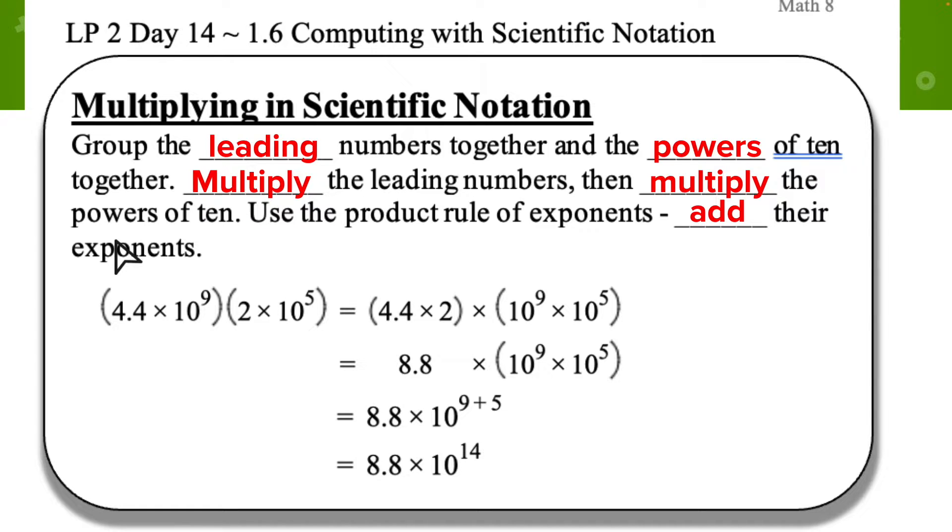So we have 4.4 times 10 to the 9th power and 2 times 10 to the 5th power. So I'm going to group the two coefficients. That's 4.4 and 2 on the front here. And then I'm going to group the powers of 10. I have 10 to the 9th power and 10 to the 5th power. So I have them grouped over here because they're going to be combined in different ways.